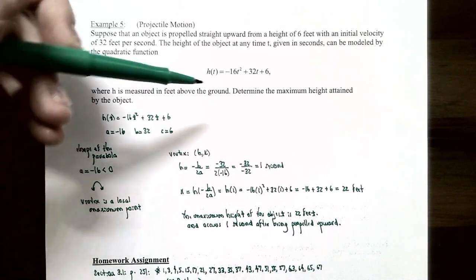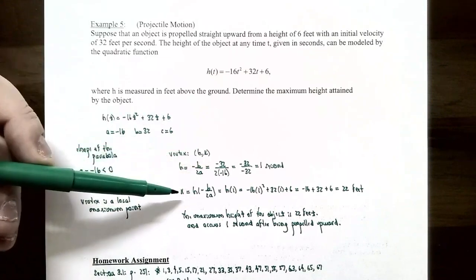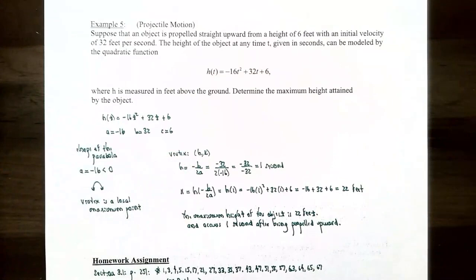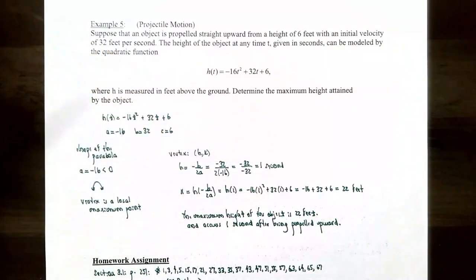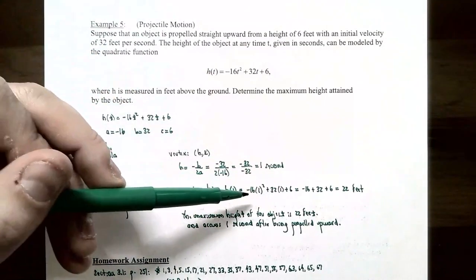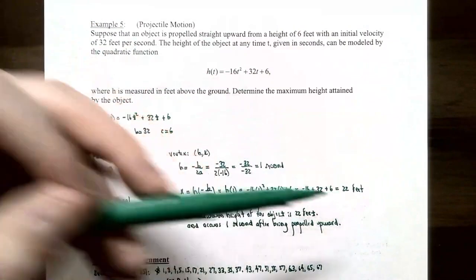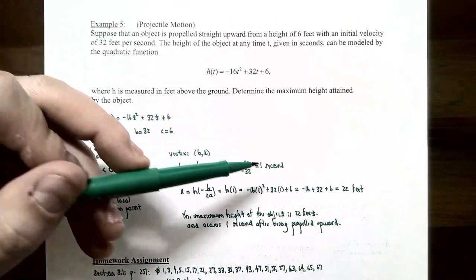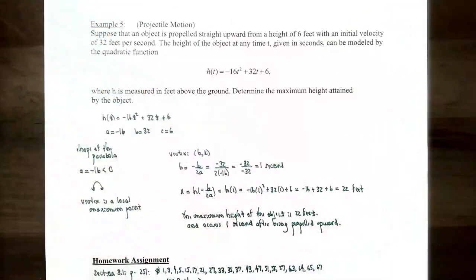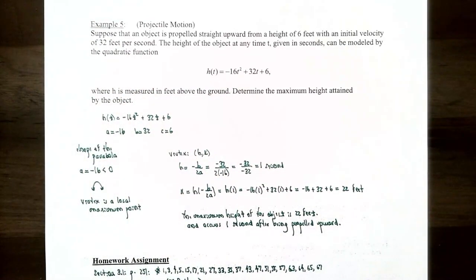To find the maximum height — the output value at the vertex — evaluate h(1): -16(1²) + 32(1) + 6 = -16 + 32 + 6 = 22. The vertex is at the point (1, 22). One second after the object was released, the maximum height is 22 feet above the ground.